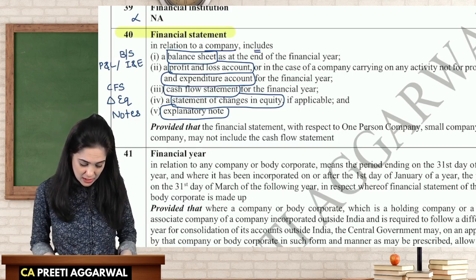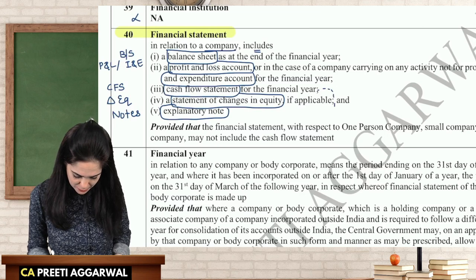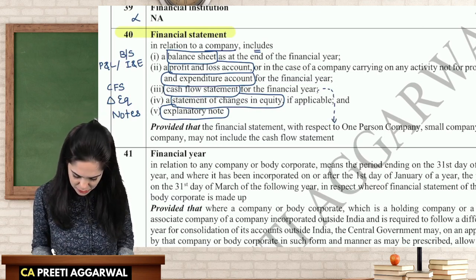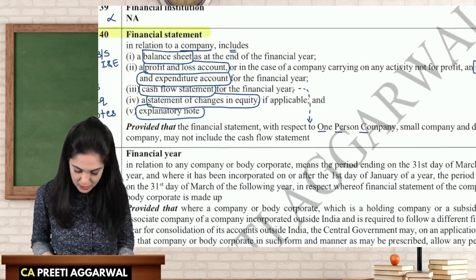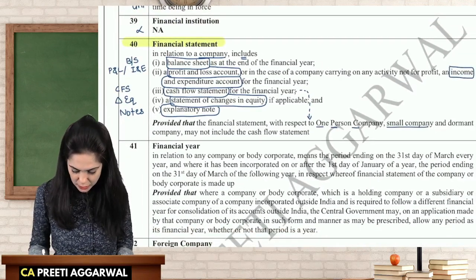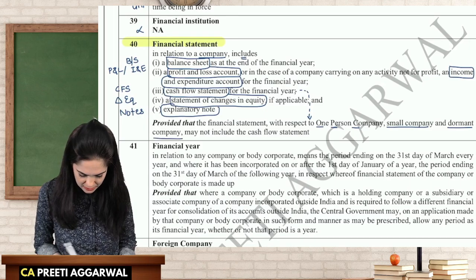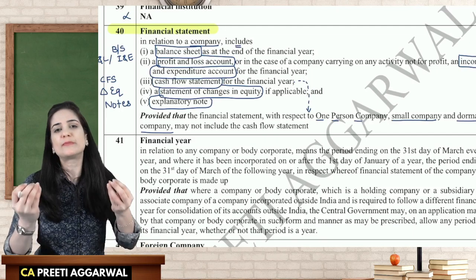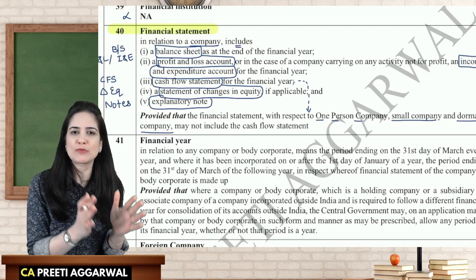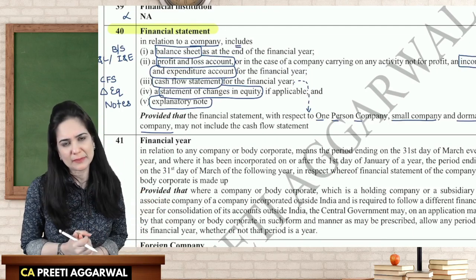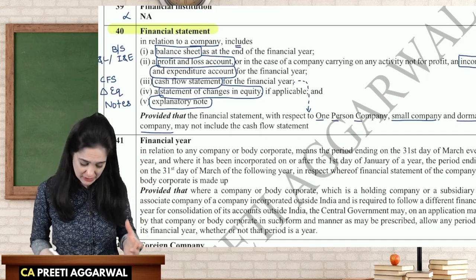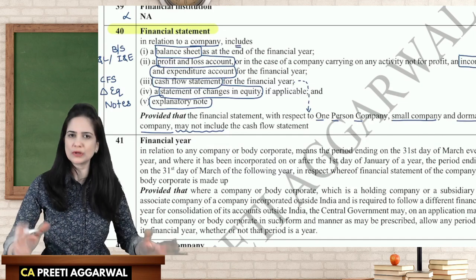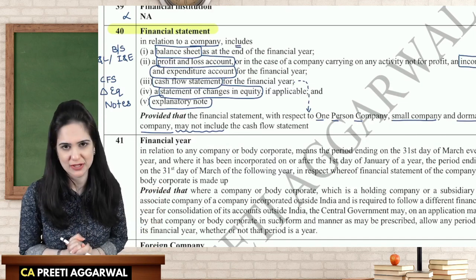There is a proviso: financial statements with respect to a one-person company, small company, or dormant company may not include the cash flow statement, because it is very tedious to prepare. This is a privilege given to OPC, small company, or dormant company. The word 'may not' means if you want you can include it, but if you don't, no action will be taken against you.